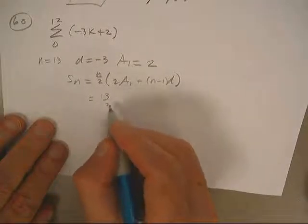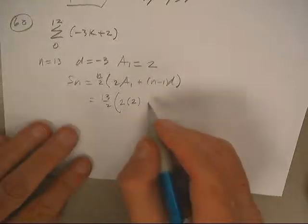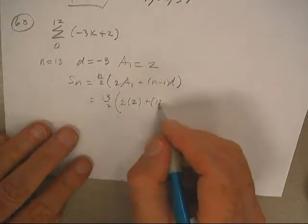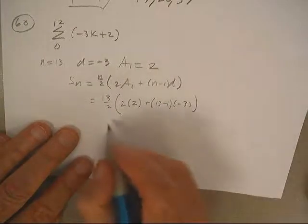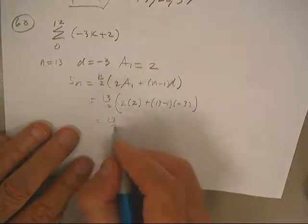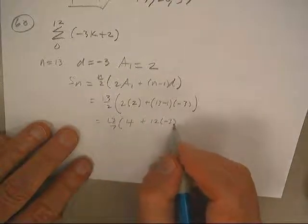Well, n is thirteen, a one is two, thirteen minus one, and the common difference is negative three. So I get thirteen halves, that's four, plus twelve times negative three.